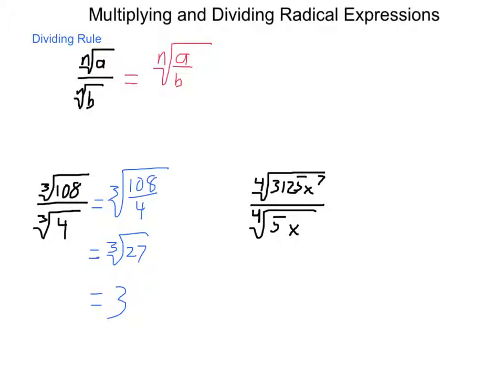The fourth root of 3125x to the 7th, divided by the fourth root of 5x, this is going to simplify into the fourth root of 3125x to the 7th over 5x. Now, going through and starting to simplify, 3125 divided by 5 is 625. x to the 7th divided by x would give us x to the 6th. So, applying our product rule now, I would end up with the fourth root of 5 times 5 cubed, 625 is 5 to the 4th, so we break it out.